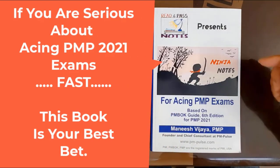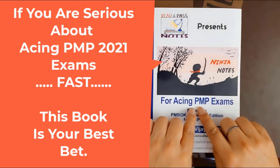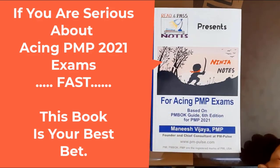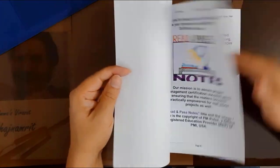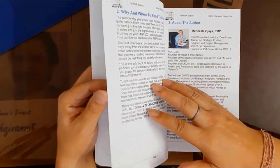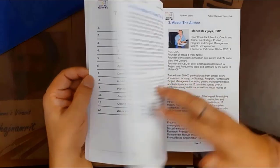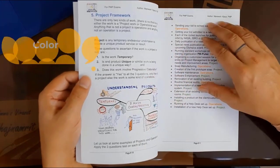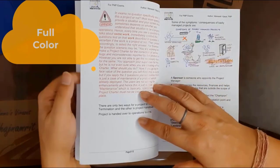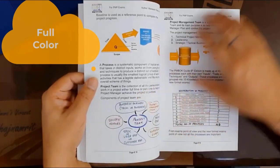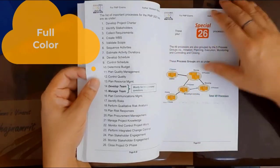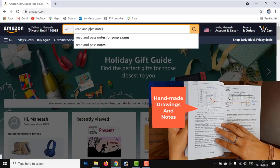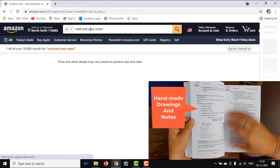By the way, did you know there is a book which is completely colored and it's only about the notes for PMP exams — all the notes, tips and tricks that you would probably need for acing the PMP exam? It's available in a book called Ninja Notes. Have a look — it's all colored from inside. Where do you find this? Ninja Notes for PMP 2021. Go to Amazon.com, Read and Pass Notes — that's my publication.